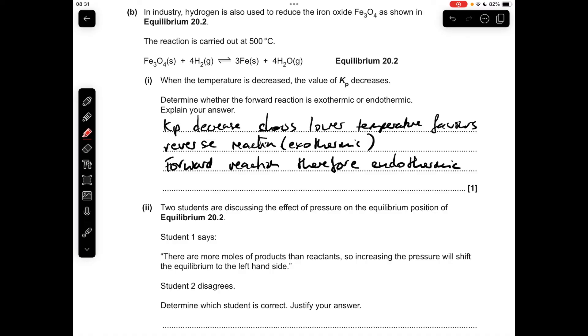If we focus on the gas state symbols, we've got 4 moles of hydrogen and 4 moles of steam. There's the same number of moles of gas on each side of the equilibrium, so pressure will not affect the position of this one. Student 2 was right to disagree. Well done if you got that one right, I think that's a little bit tricky.